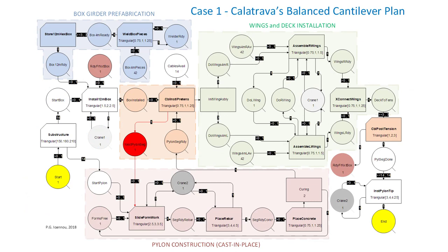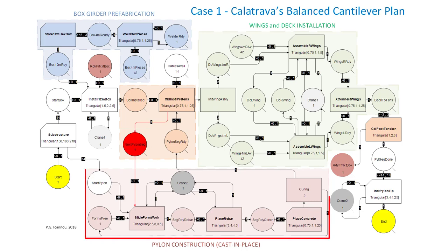Shown here is Case 1, the Easy Strobe model for Calatrava's original balanced cantilever plan. The Easy Strobe model corrects the corresponding Cyclone model by adding a feedback loop highlighted by the red queue and two red links. The absence of this feedback loop in the Cyclone model is a significant modeling mistake that allows one pylon segment to be poured right after another without waiting to connect each pylon segment to its corresponding deck segment to maintain bridge stability — thus allowing pylon construction to significantly outpace deck construction. The purpose of this feedback loop is to prevent construction of the next pylon segment until the previous one has been connected via stay cables to the corresponding deck segment.